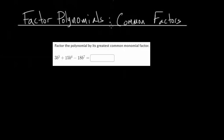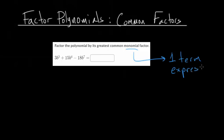In this video, I'd like to talk about factoring polynomials when they have common factors. It helps to start with an example. In this problem, we need to factor the polynomial by its greatest common monomial factor. A monomial is just a one-term expression, so we're going to factor out some one-term expression. Factoring is essentially the reverse of the distributive property, at least factoring with common factors.